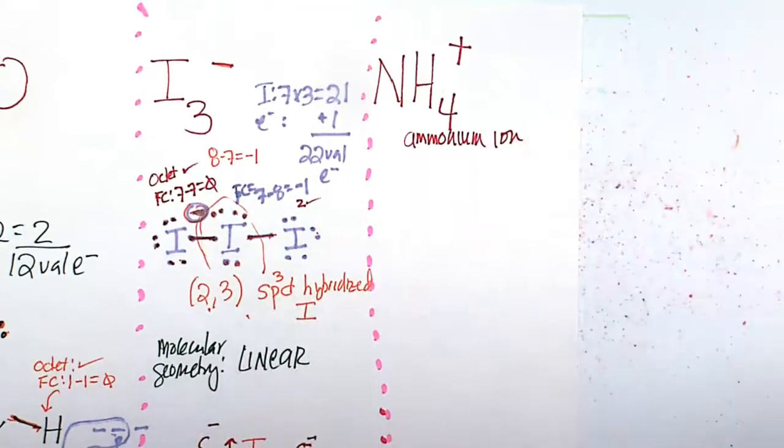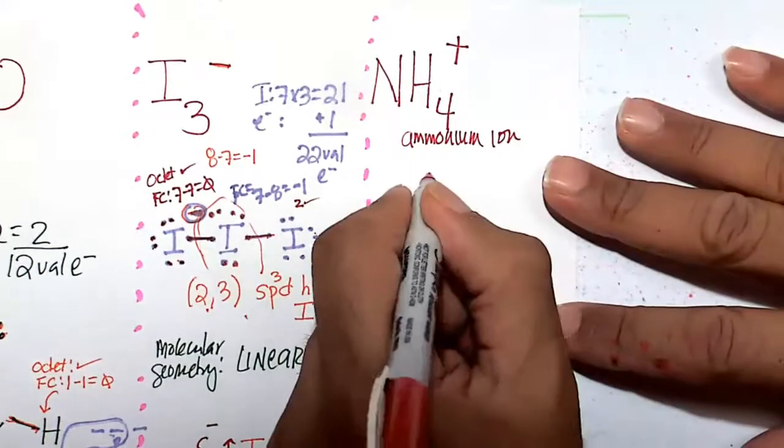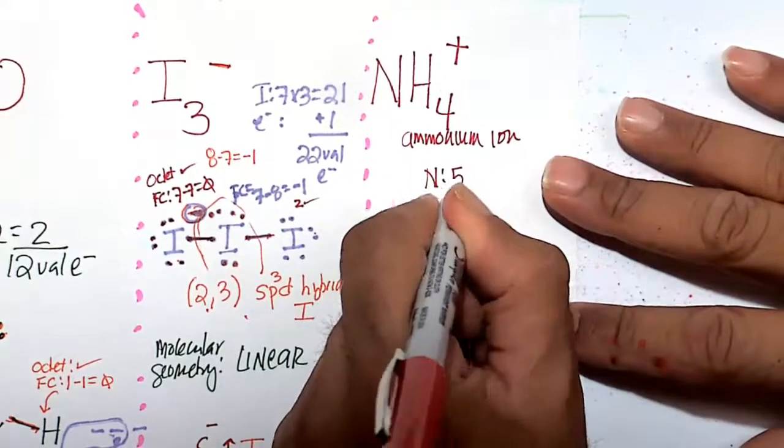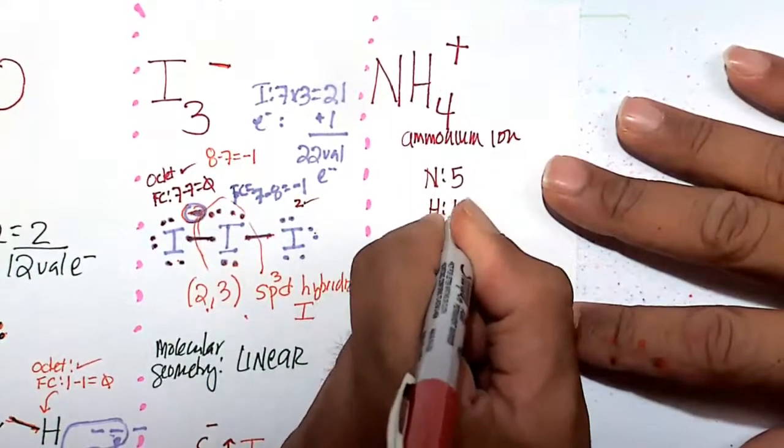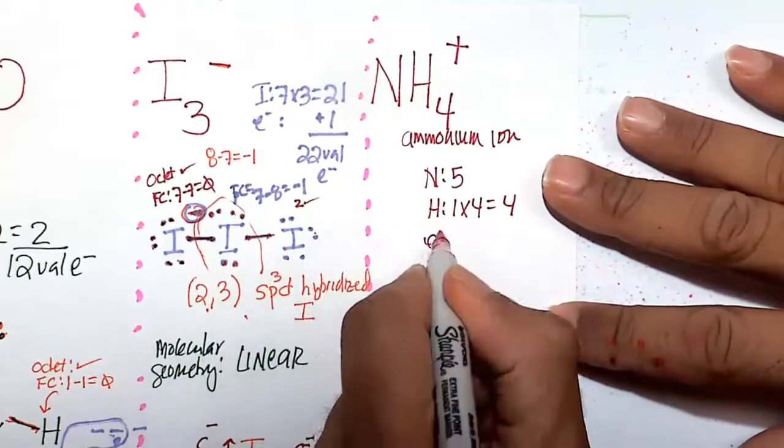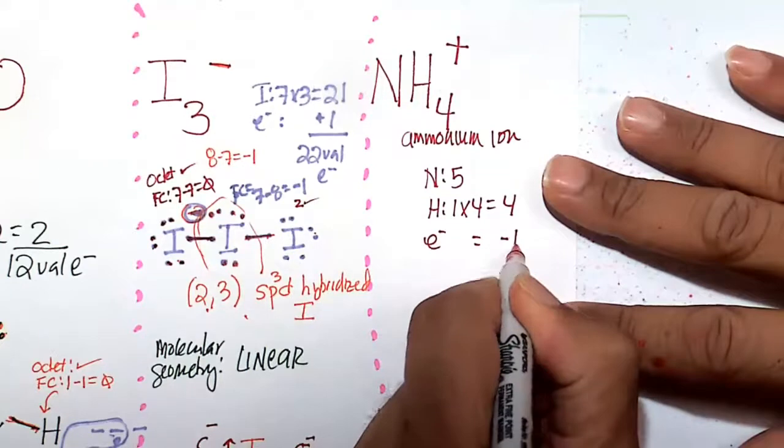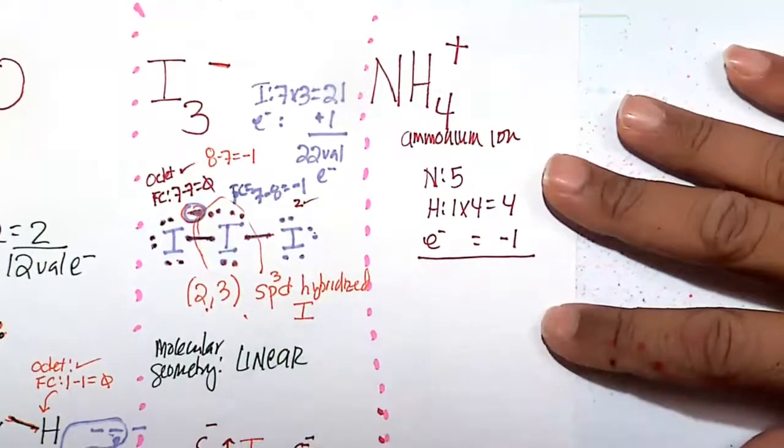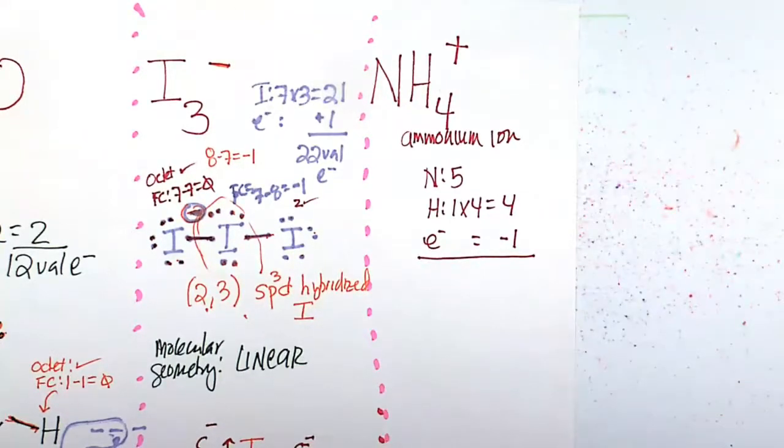It's picked up a proton H+ to become NH4+. So N is happy at 5, hydrogen is happy at 1, but we've got 4 of them, so 1 times 4 is 4. For this to become positively charged, it actually has lost an electron. Removing that electron makes it positive. It's sacrificed an electron.